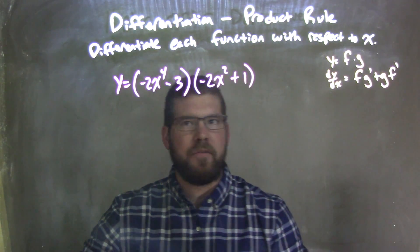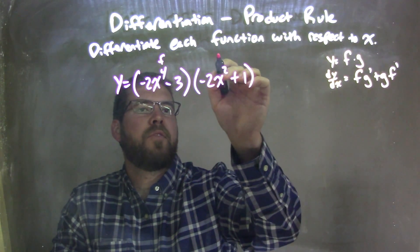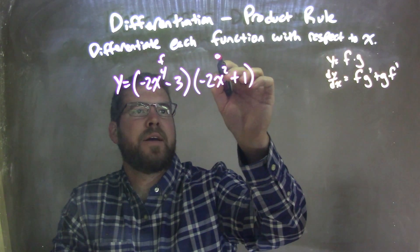Well, let's go label which one's my f and which one's my g. The first one's f, the negative 2x to the 4th minus 3, and this second one, negative 2x squared plus 1, is my g.